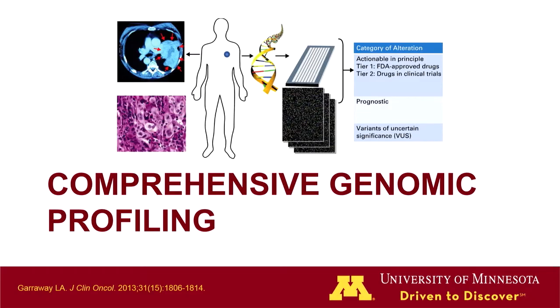Up until very recently, comprehensive genomic profiling was what I would call an esoteric test — boutique medicine — with highly variable rates of insurance reimbursement. This was only for select patients and select cancer types where there were therapeutic indications. It's a technique where we obtain a piece of the tumor and do very broad sequencing looking for somatic mutations and genomic signatures, and then use our targeted armamentarium of therapies, either on-label or off-label, to potentially target the molecular drivers of that tumor.